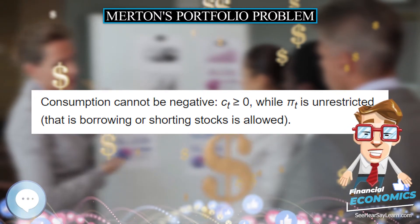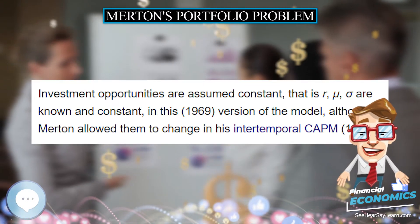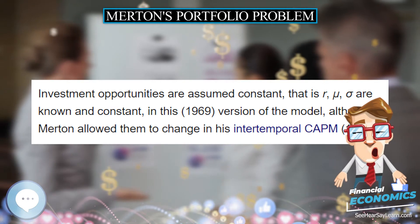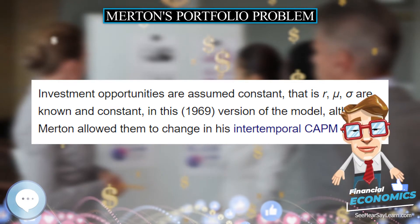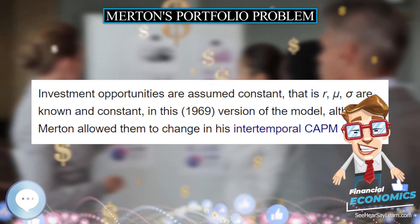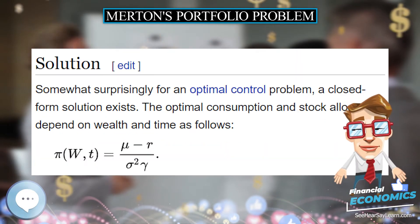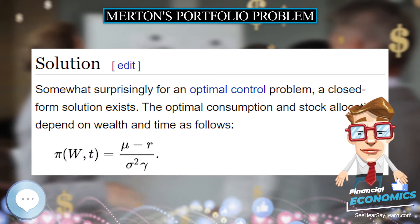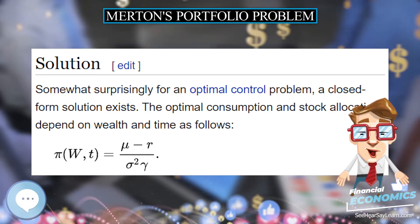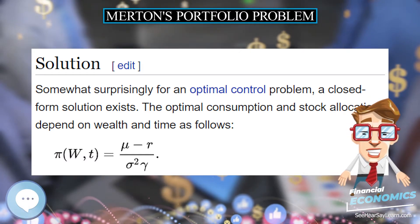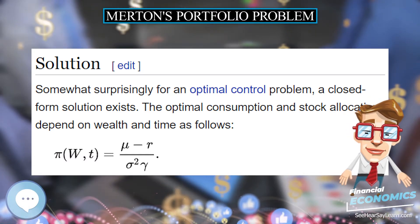Where gamma is a constant which expresses the investor's risk-aversion. The higher the gamma, the more reluctance to own stocks.